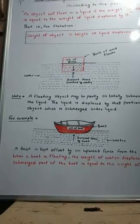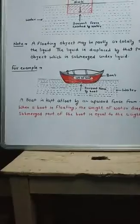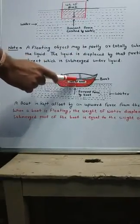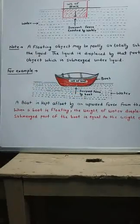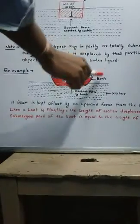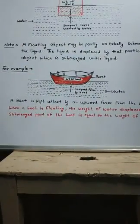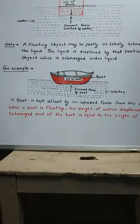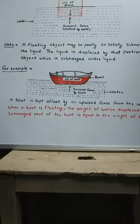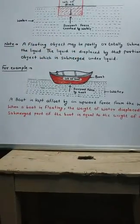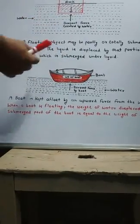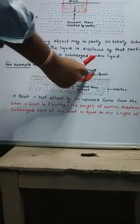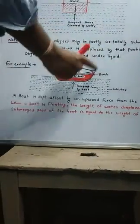For example, consider a boat. You can see a boat. The weight of the boat acts downward. Because the boat is in liquid, there will be a buoyant force acting upward. The boat is floating because the upward buoyant force balances the downward weight. The weight of the boat equals the weight of the liquid displaced by the boat.